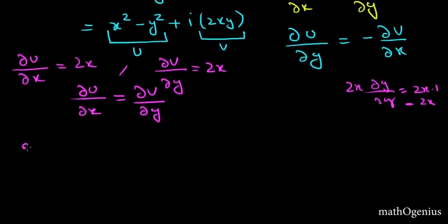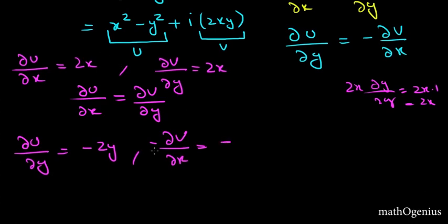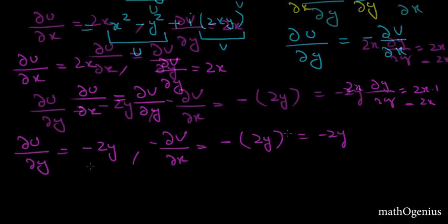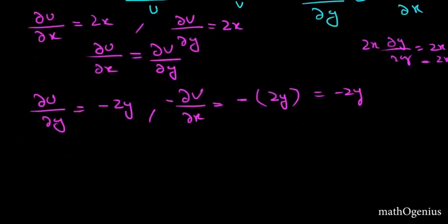We have to find ∂u/∂y, which is minus 2y. This is 0 and minus 2y. Now we have to find minus ∂v/∂x, which equals minus 2y from here.